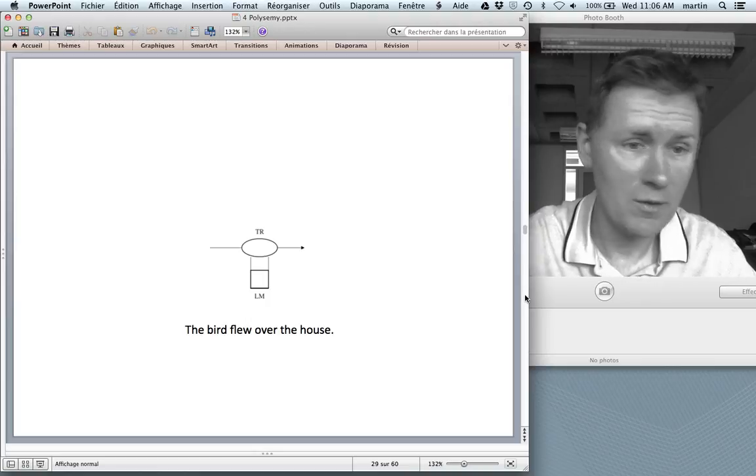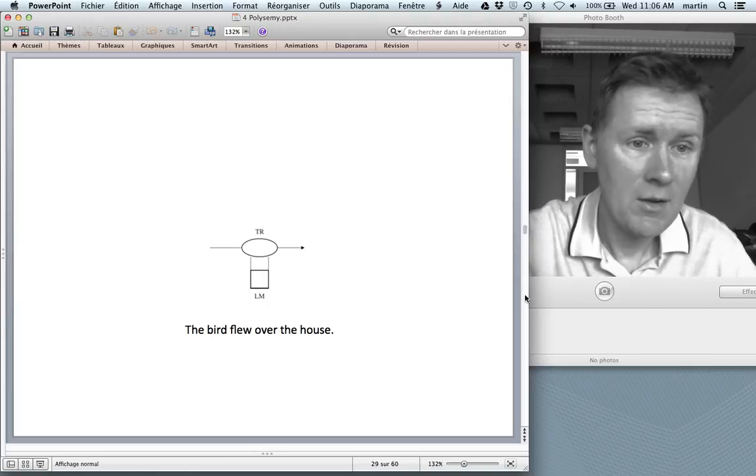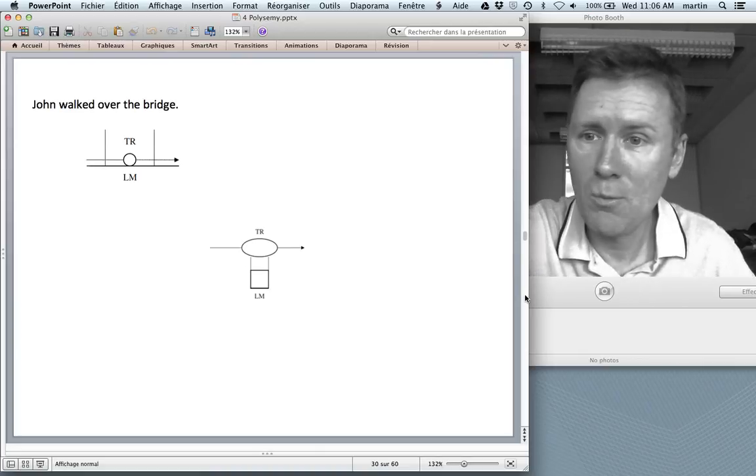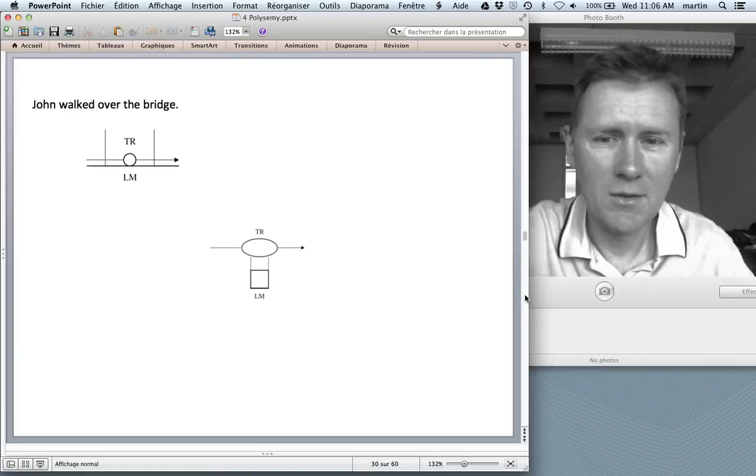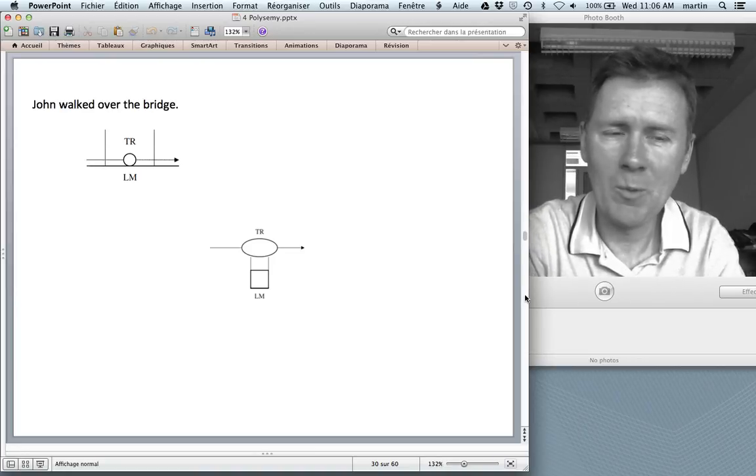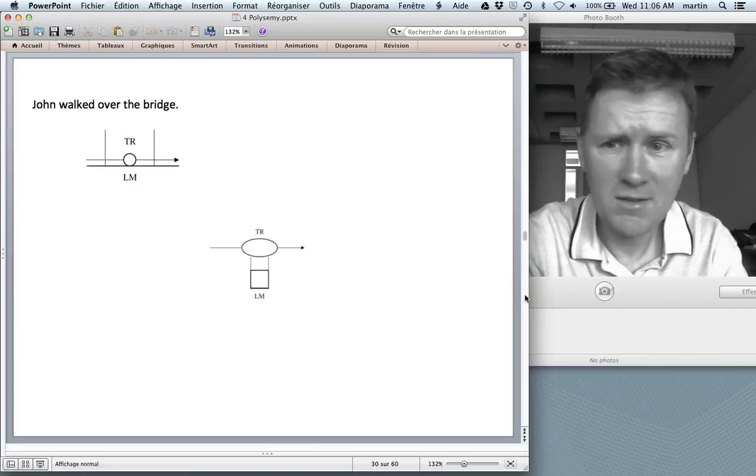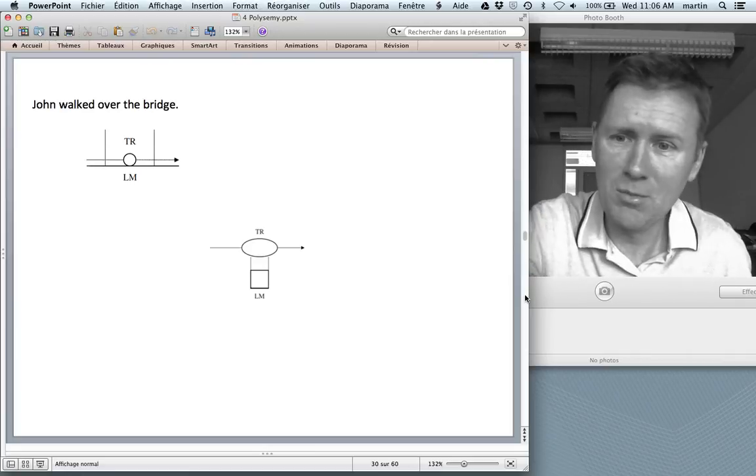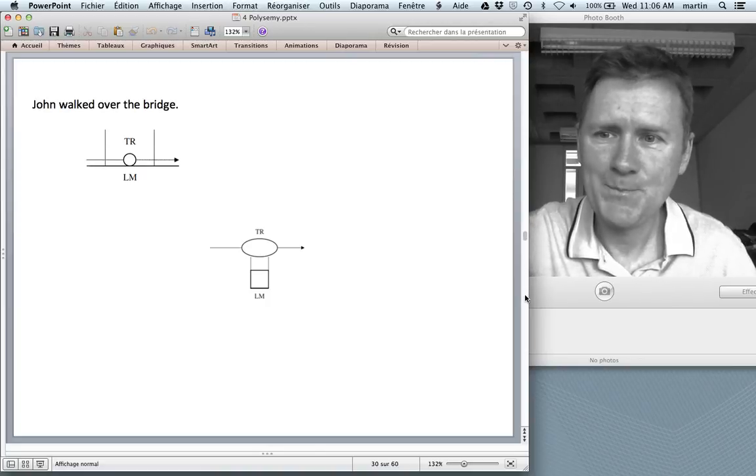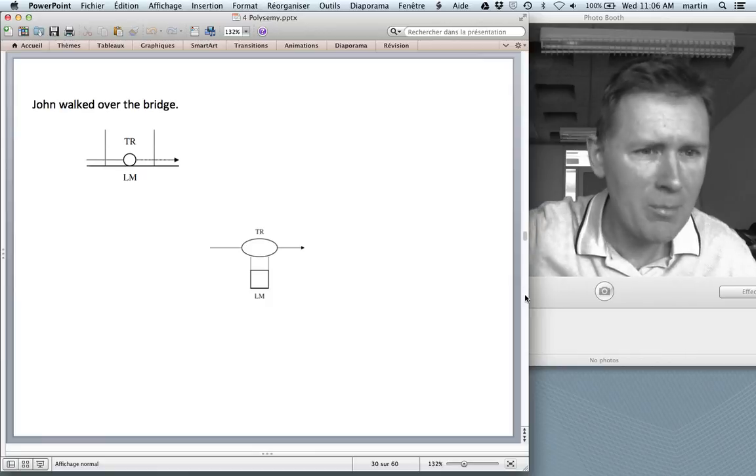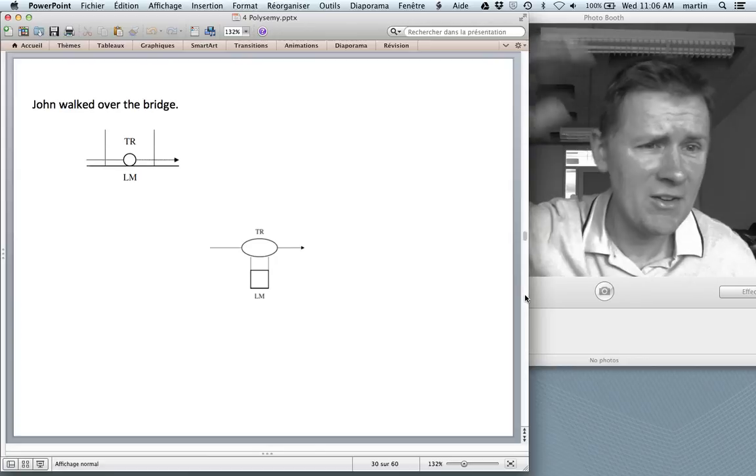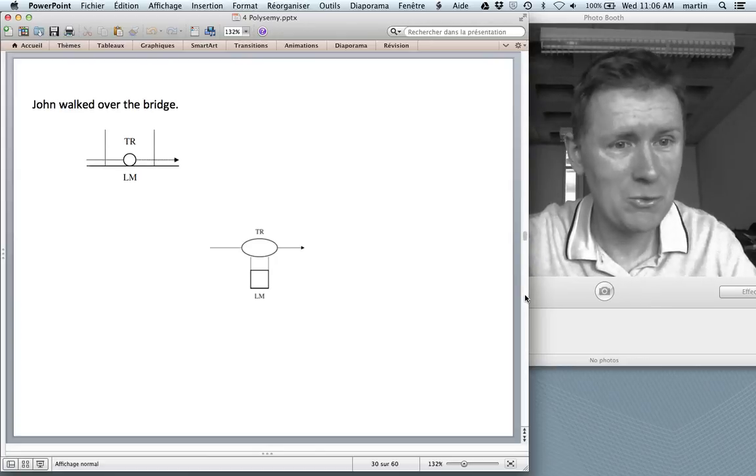Now there are different meanings of over. Maybe you've drawn something that looks like this. Maybe you've drawn something different. Here's another sense of over. John walked over the bridge. So he made contact with the bridge. He was in contact with the bridge. And what we really want to say with this is that he crossed the bridge. So what's similar, you can see similarities between the two, but also differences. So clearly John was sort of on top of the bridge. While the bird was not on top of the house, it was higher than that. So small differences, but crucial differences.